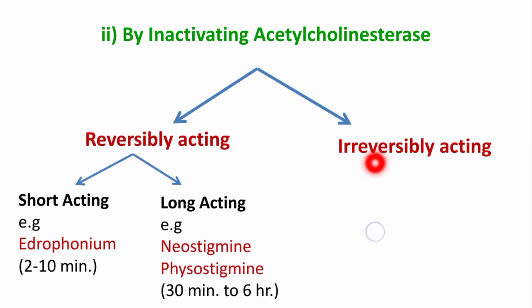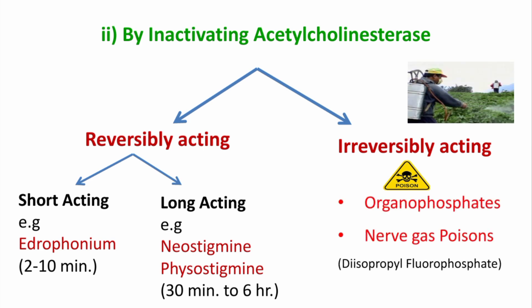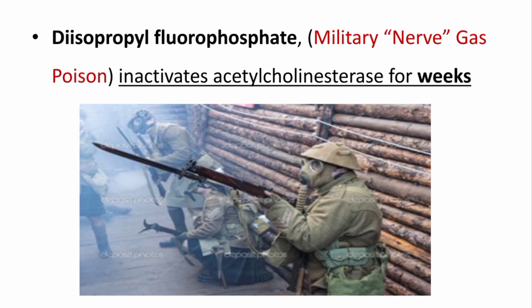Then there are irreversibly acting drugs which inactivate the acetylcholinesterase enzyme irreversibly. Basically these are not drugs but poisons or toxins, like organophosphates or pesticides and nerve gas poisons like diisopropyl fluorophosphate (DFP). Diisopropyl fluorophosphate is a military nerve gas poison and it inactivates acetylcholinesterase enzyme for weeks.